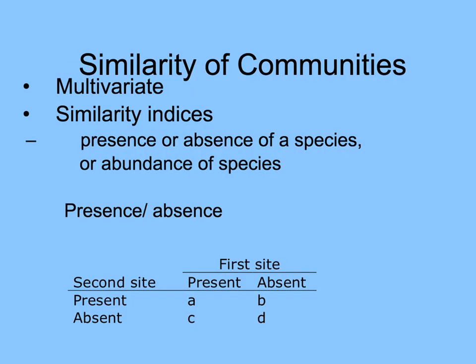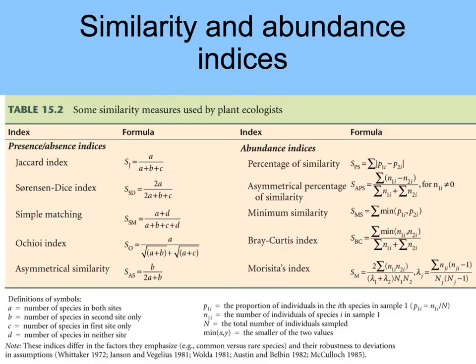Similarity indices like the Jaccard Index are actually a multivariate conglomeration of the presence or absence of species, or their abundance, comparing a number of species in a community. And there are loads of these indices. The Jaccard Index is a popular one, but there are many others — the Bray-Curtis Index, Morisita's Index, et cetera.